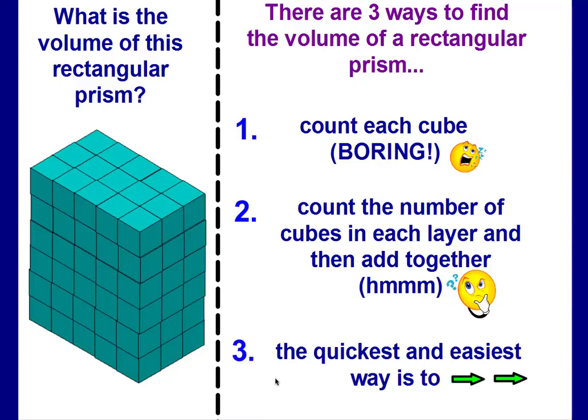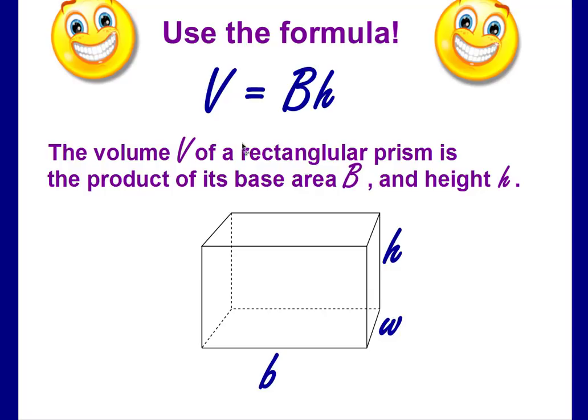Or the quickest and easiest way is going to be to use a formula. The formula to find the volume of a rectangular prism is V, capital V for volume, equals capital B times h. The volume of a rectangular prism is the product of its base area, which is a capital B, and its height.